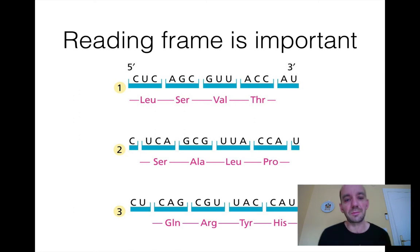But this also means that the reading frame is very important. If you add or delete one nucleotide, you will get a completely different sequence. If you start with the first codon, you will have leucine, serine, valine, and threonine. But if you start with the second position, you will have serine, alanine, leucine, and proline. And if you start with the third, you will have glutamine, arginine, tyrosine, and histidine. So you get completely different sequences by just shifting the reading frame one step. It's very important that mutations conserve the reading frame. Otherwise, you will have completely changed protein sequences. In particular, you will quite likely acquire a stop codon, because by random every 21st codon more or less should be a stop codon. We have three stop codons out of 64.